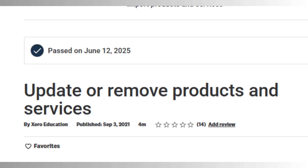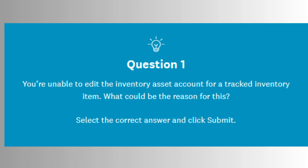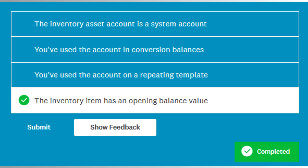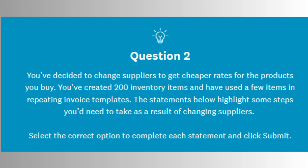Finally, resolving common inventory problems covers issues like negative inventory balances, incorrect item codes, or discrepancies between actual and system stock. For example, if a tracked item has been sold before entering an opening balance, Xero might show errors. Understanding how to fix these — such as by editing the transaction or correcting the item setup — is essential.